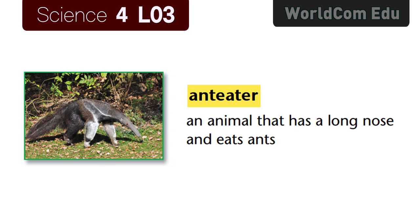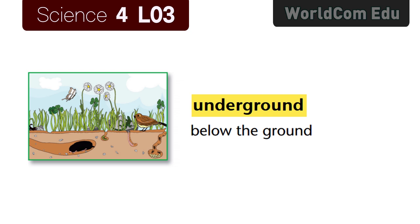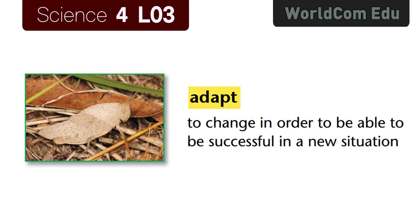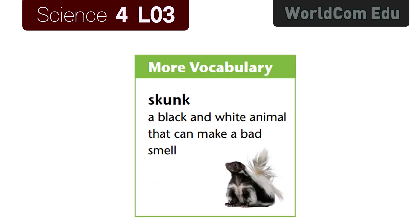Lesson 3: Animal Adaptations. Vocabulary review: Anteater — an animal that has a long nose and eats ants. Tongue — the soft movable part in your mouth. Underground — below the ground. Spray — to blow liquid into the air. Adapt — to change in order to be successful in a new situation. Camouflage — an animal's color or shape that makes it hard to be seen. Skunk — a black and white animal that can make a bad smell.